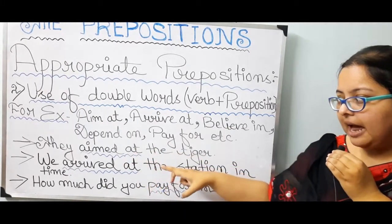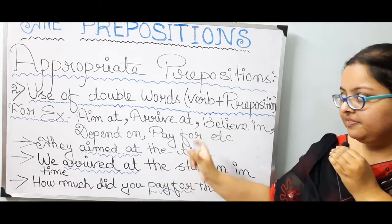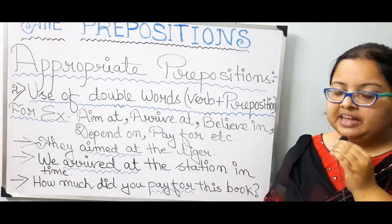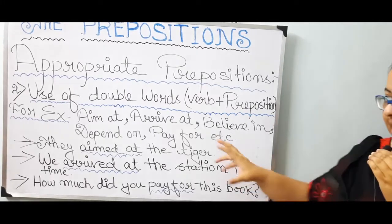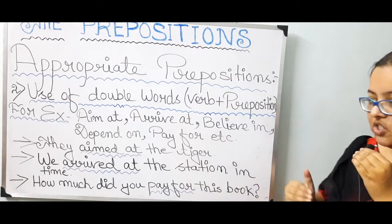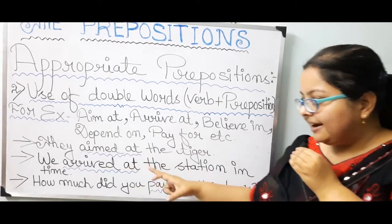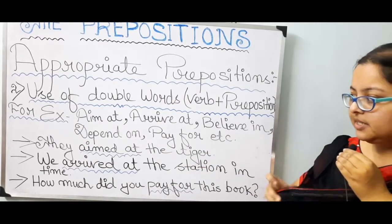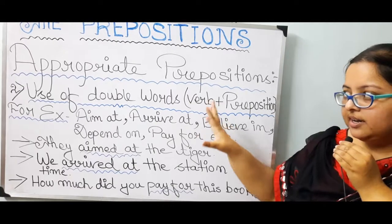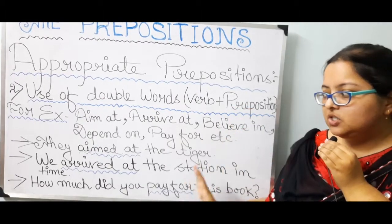Next: we arrived at the station in time. 'Arrived at' — since this activity happened in the past, we use 'arrived'. All three forms of 'arrive' are the same: first, second, and third form are all 'arrived'. So: we arrived at the station in time. Note that 'in' here is also a preposition, but since I want to indicate double words, I only mark 'arrived at'.